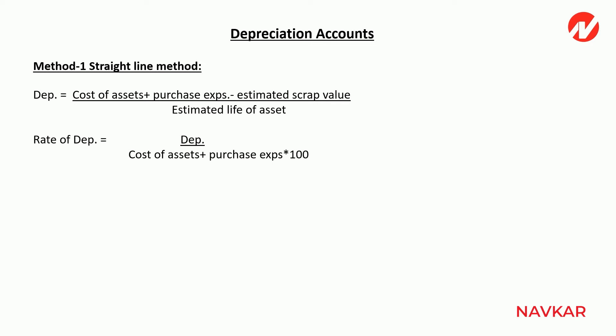The rate find formula is another formula: depreciation divided by cost of the asset plus purchase expenses, into 100. This rate find formula is used when you need to find the rate of depreciation.